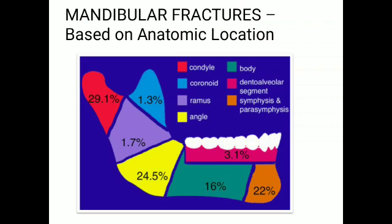For example, if there is an angle fracture, there is a classification of horizontally favorable fracture or horizontally unfavorable fracture, and vertically favorable fracture or vertically unfavorable fracture.